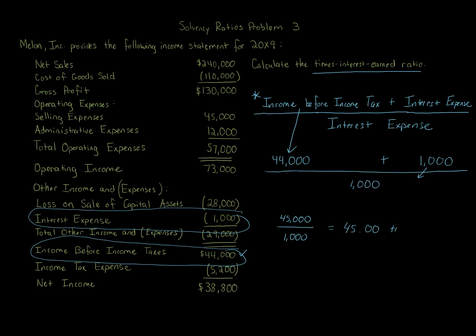So the result is 45 times. This ratio shows the risk that interest payments will not be made if earnings decrease. A ratio of 45 is very high, meaning interest payments are very likely to be paid even if earnings decline, because the interest expense is so low relative to earnings. The higher the ratio, the better it is for a creditor or lender.